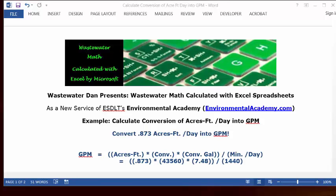Today's problem reads: convert 0.873 acres per foot per day into GPM.